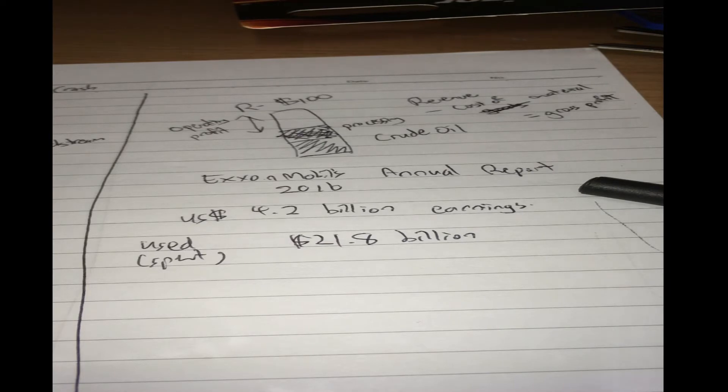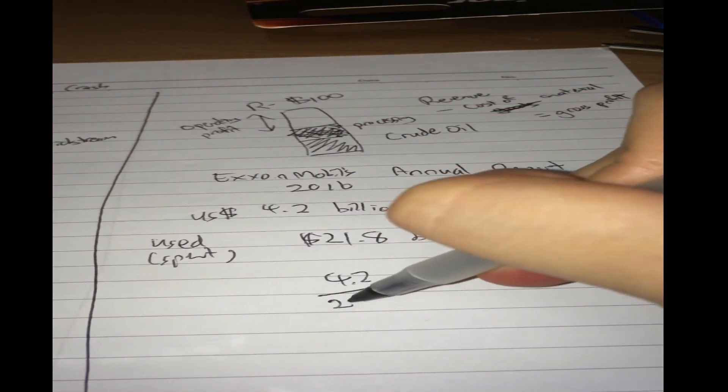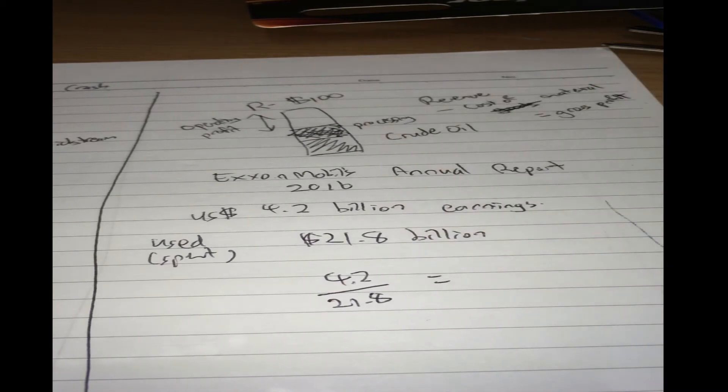And they spent about $21.8 billion. So, that's all the costs in your industry. Now, how much is that going to be? Let's get the calculator out.